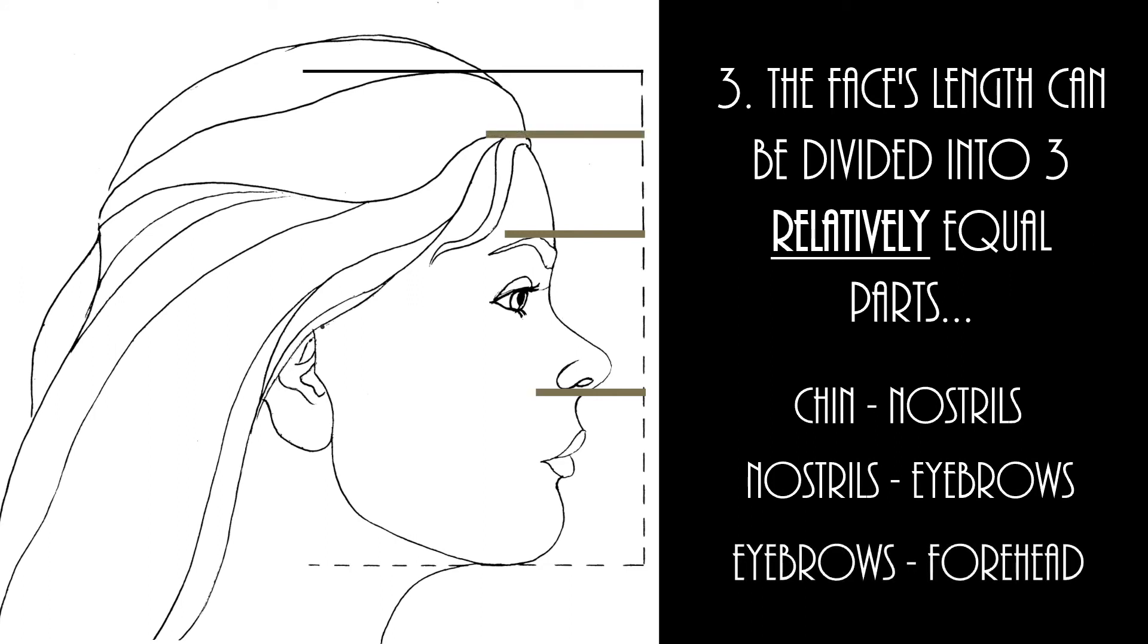At least in theory, because as you can see, this division into three equal parts doesn't exactly work very well in our case since the distance from our girl's forehead to eyebrow is smaller than the distance from her nostrils to her chin for instance. But that's totally fine, and this script is mainly for orientation and not for exact measurements.